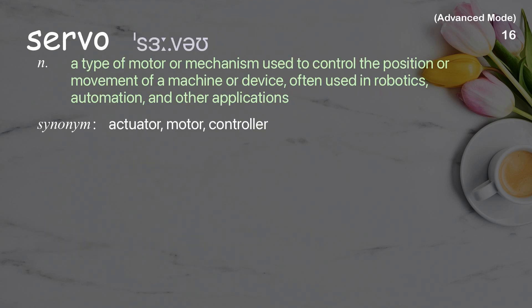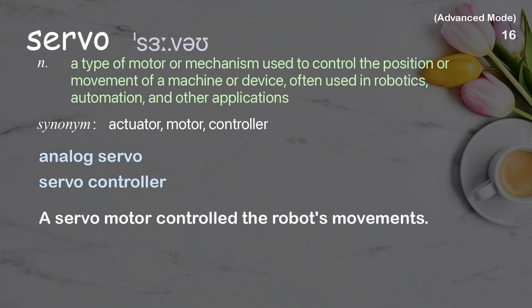Servo: a type of motor or mechanism used to control the position or movement of a machine or device, often used in robotics, automation, and other applications. Examples: analog servo, servo controller. A servo motor controlled the robot's movements.